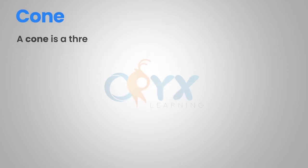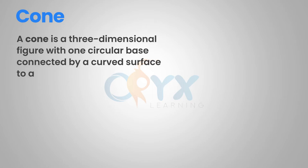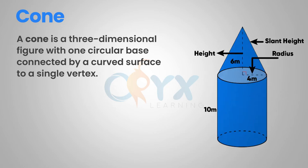A cone is a three-dimensional figure with one circular base connected by a curved surface to a single vertex. As we can see here, within our cone we can have a radius, the height of the cone, and the slant height of the cone.